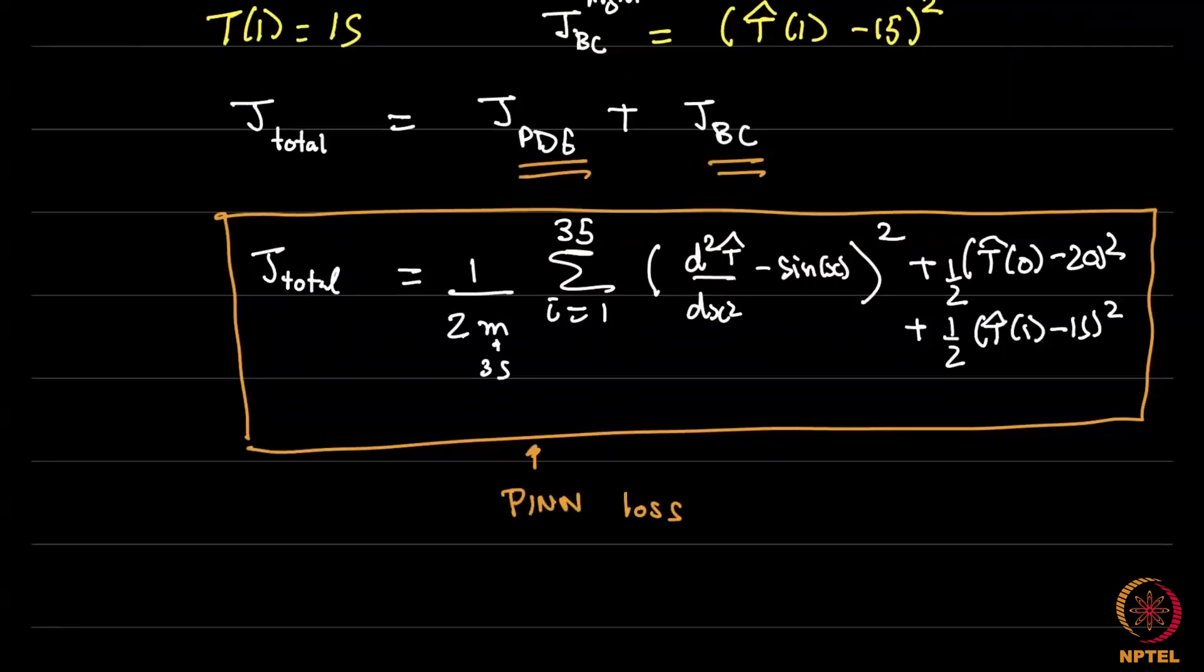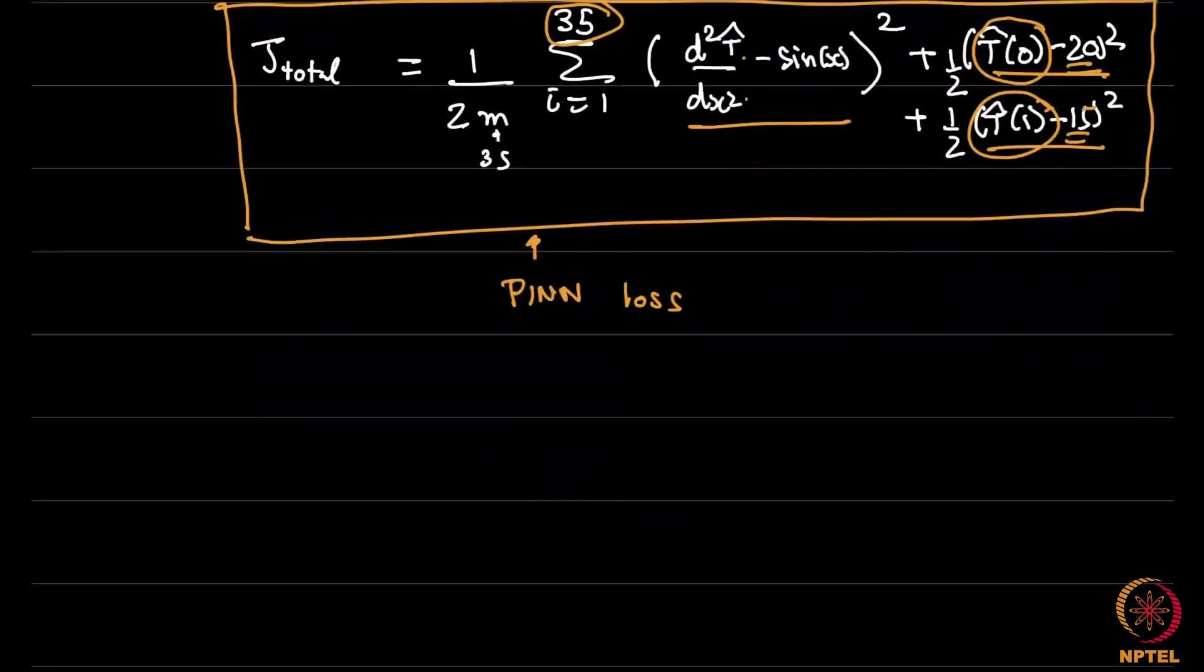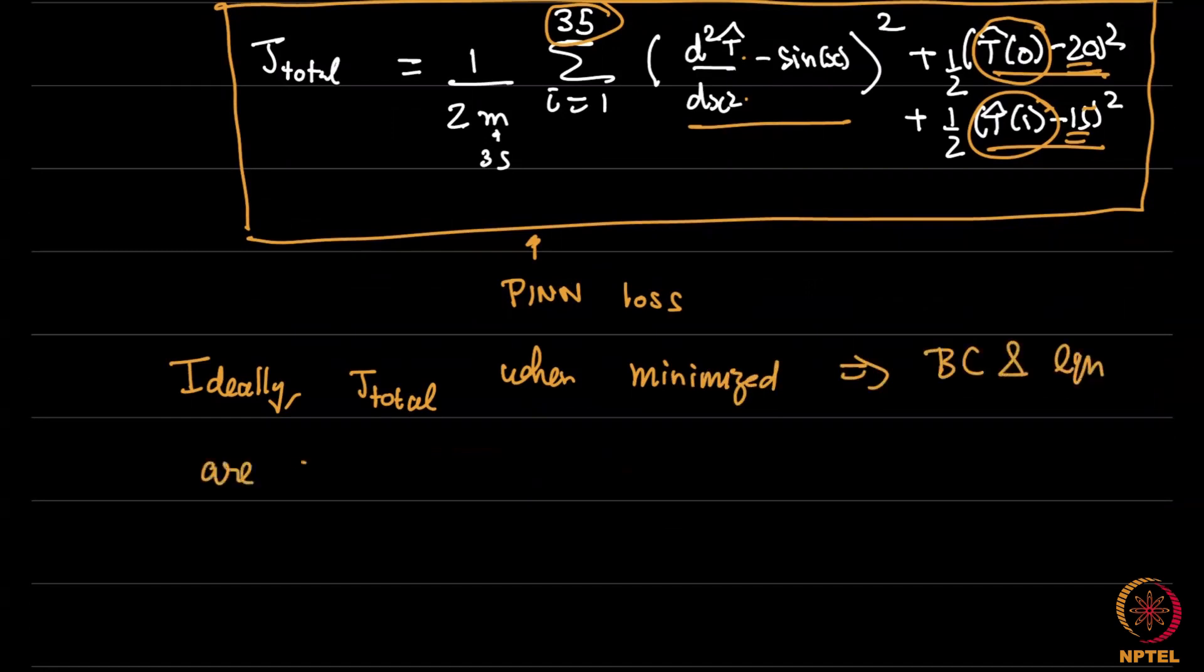So the PIN loss is made up of the PDE loss and the boundary condition loss. What does this do? So when you try to minimize the PIN loss it will be ideally minimized when this is 0, when this is 0, this is 0 and this is 0 and the ideal minimization will be obviously d²T/dx² equal to sin(x) at these 35 points and T at the left is exactly 20 and T at the right is exactly 15. Unfortunately, obviously in practice ideally J_total when minimized equals 0, this implies that BC and equation are satisfied exactly. But this minimum does not happen in practice.